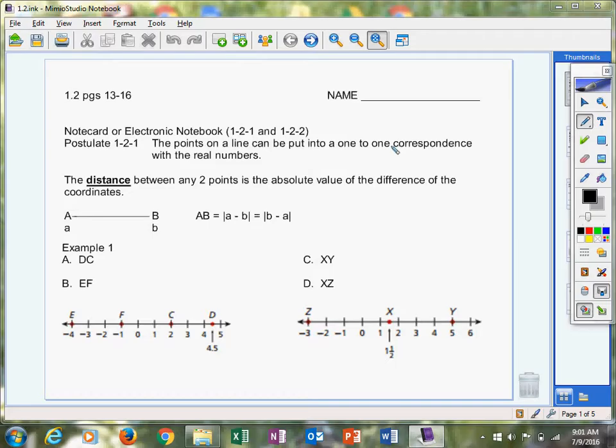It's very basic. It's almost like, why are we writing this down kind of thing, but it is a postulate. Now, the distance, this is where I want you to focus your attention. The distance between any two points is the absolute value of the difference of the coordinates. So whatever their value is, if you subtract the value of each point that you're finding and take the absolute value of it, that's how far it is. We take the absolute value because we're looking for distance.